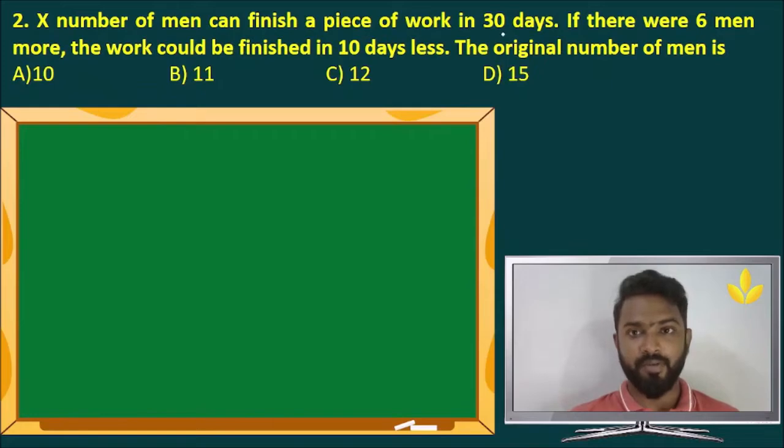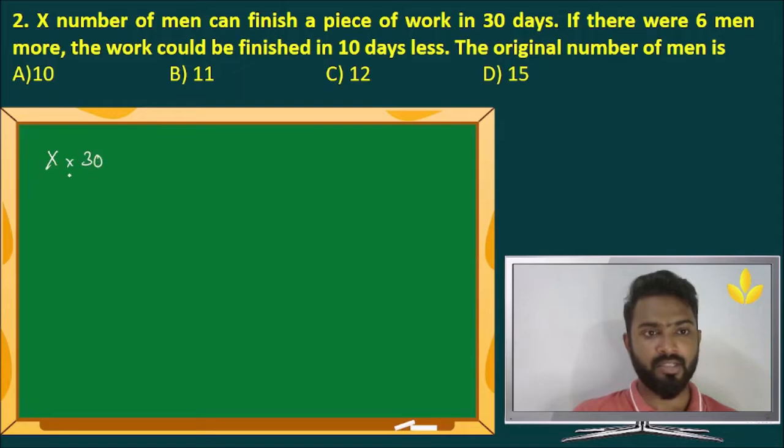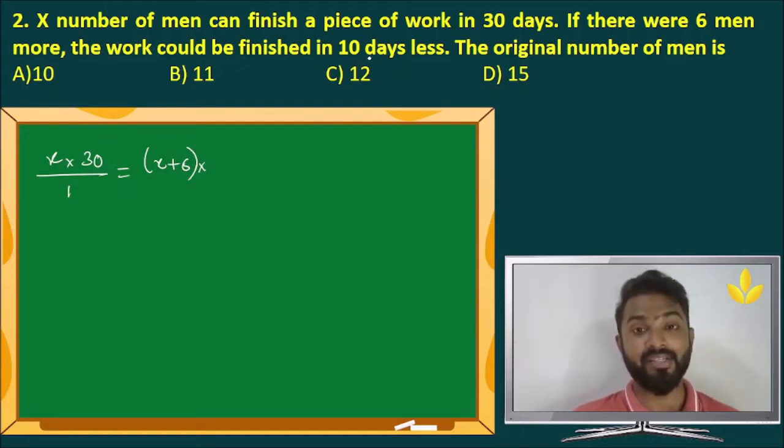Let us continue. X number of men can finish a piece of work in 30 days. If there were 6 men more, the work could have been finished in 10 days less. The original number of men is what? So M1 is x, T1 is 30 divided by W1 is 1 equals, if there were 6 men more x plus 6 into 10 days less, 30 minus 10, that is 20 days divide by 1.